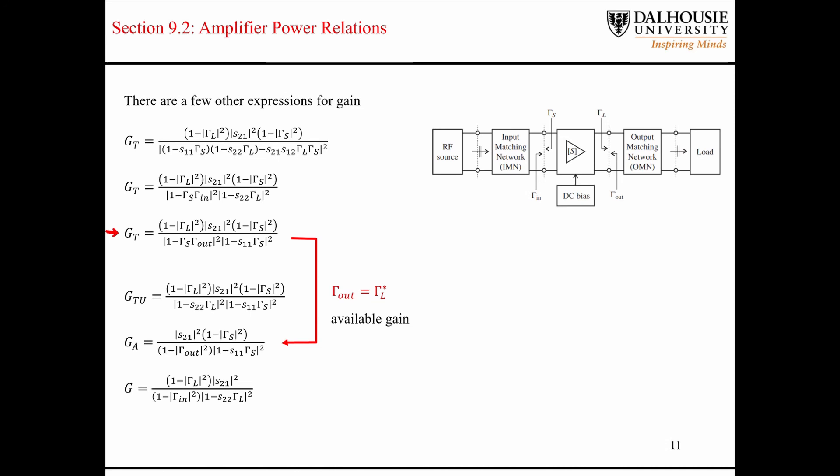Similarly, for the operating gain, you start off with this expression for the transducer gain. You make the assumption that the input of the transistor is perfectly matched to the gamma S, or the input matching network. And after some simplification, you end up with this expression here for the operating gain.